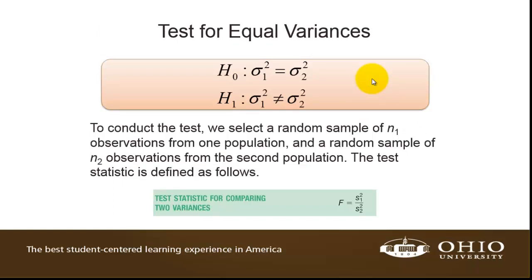If you want to test for equal variances, this is the null and alternate hypothesis we would use. Note this is a two-sided test. You could have a one-sided test, for example, if you were interested in knowing whether one population had a higher or lower variance than the other. The test statistic used for this hypothesis test is the F-test statistic, determined by taking the sample variance of the first sample and dividing it by the variance of the second sample. That's why the F distribution has a numerator degree of freedom and a denominator degree of freedom as the two parameters of interest.